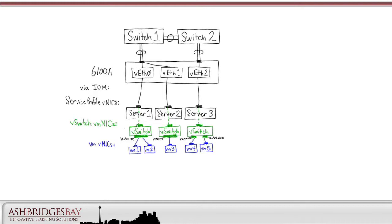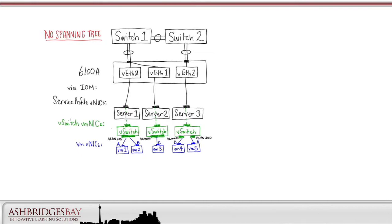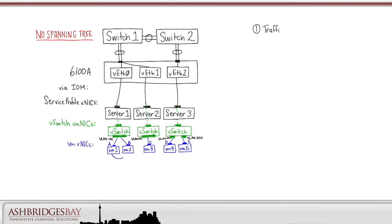The VM vNICs have MAC addresses A, B, C, D, and E. Remember, no spanning tree in end-host mode.